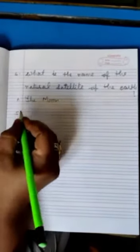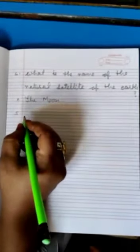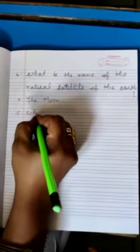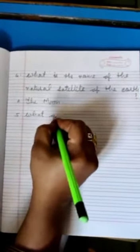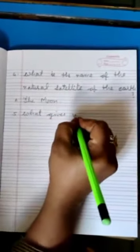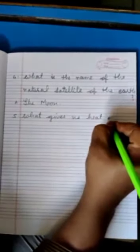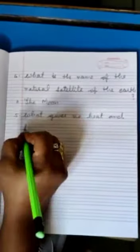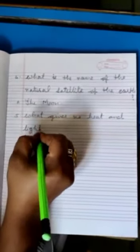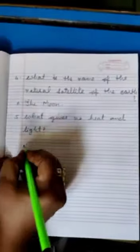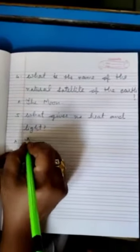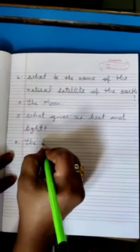Five. What gives us heat and light? Answer: The Sun. Thank you.